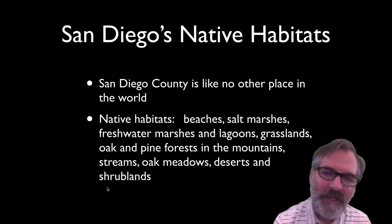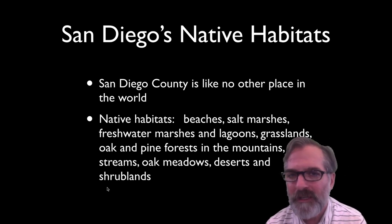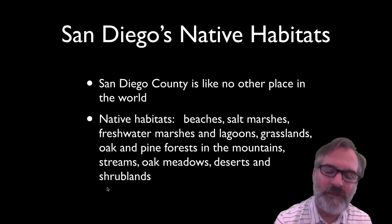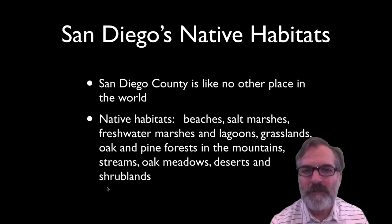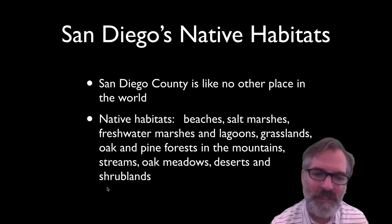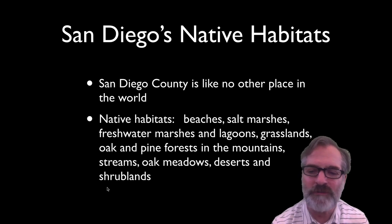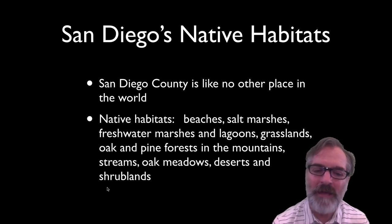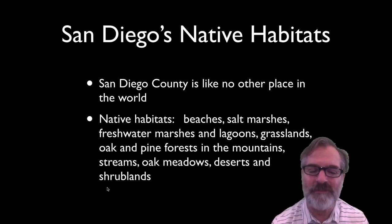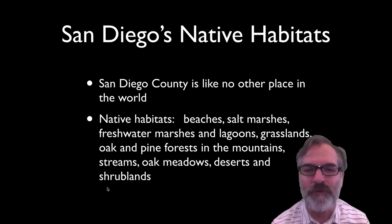When you think of San Diego, it's an amazing place to live. I've literally been to the snow up in Julian and on the exact same day gone surfing down at Torrey Pines. You've got mountains and beaches, salt marshes, freshwater marshes, lagoons, estuaries, grasslands, oak and pine forests, riparian ecosystems, mountains, streams, oak meadows, deserts, and shrublands. But what is the largest ecosystem in California?